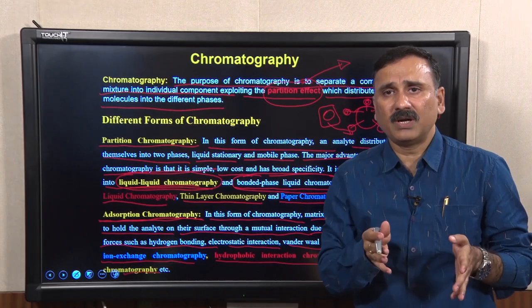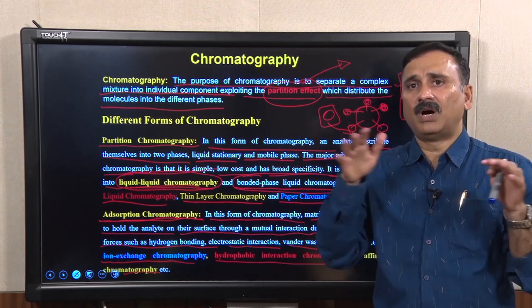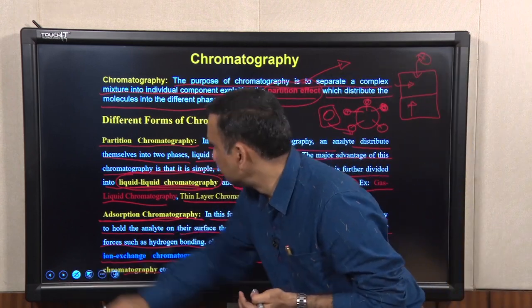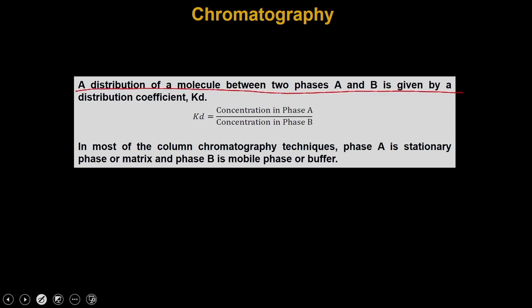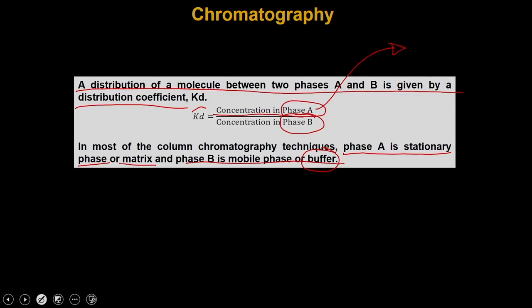Irrespective of whether you do partition or adsorption chromatography, the basic principle remains the same: you are distributing molecules between two different phases. In column chromatography, the distribution coefficient KD equals the concentration in phase A versus phase B. Phase A is always the stationary phase or matrix, and phase B is the mobile phase or buffer, used to calculate KD values.